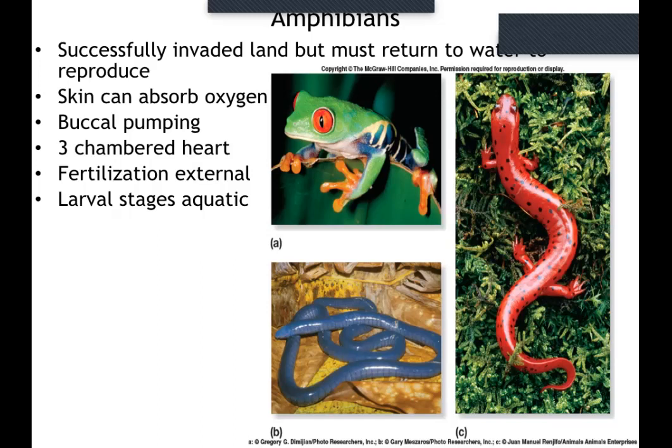Amphibians have to live near water or they will desiccate. Some can survive droughts by getting into wet soil and going into a kind of hibernation, but generally they need to live near water and put their eggs in water so that tadpoles and larvae can swim and survive. Even this worm-like, snake-like thing on the left side is an amphibian. Here we have salamanders, frogs, and so forth.